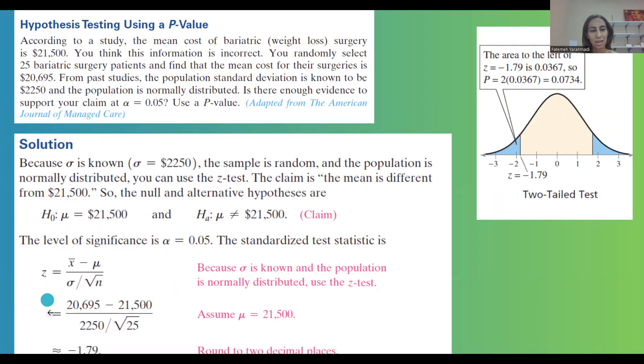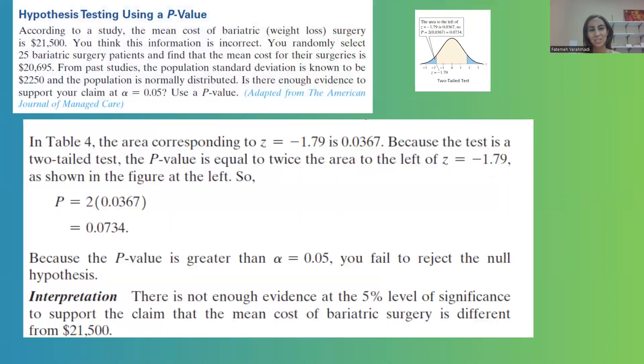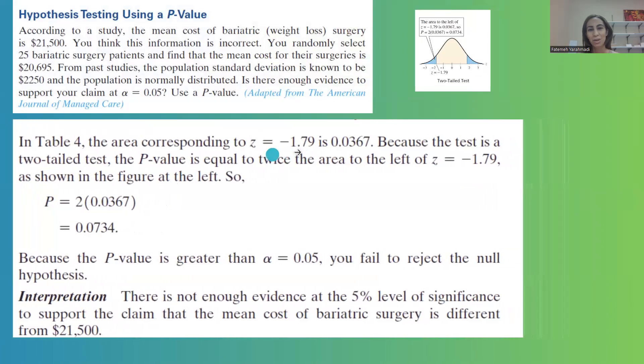Your Z value is negative 1.79 and you have a two-tailed test because the claim or alternative hypothesis in this case is two-tailed. This is Z which is negative 1.79. So since Z is negative 1.79, the area to the left hand side of Z is about 0.0367 and since you have a two-tailed test you're going to multiply this area, multiply this probability by 2.